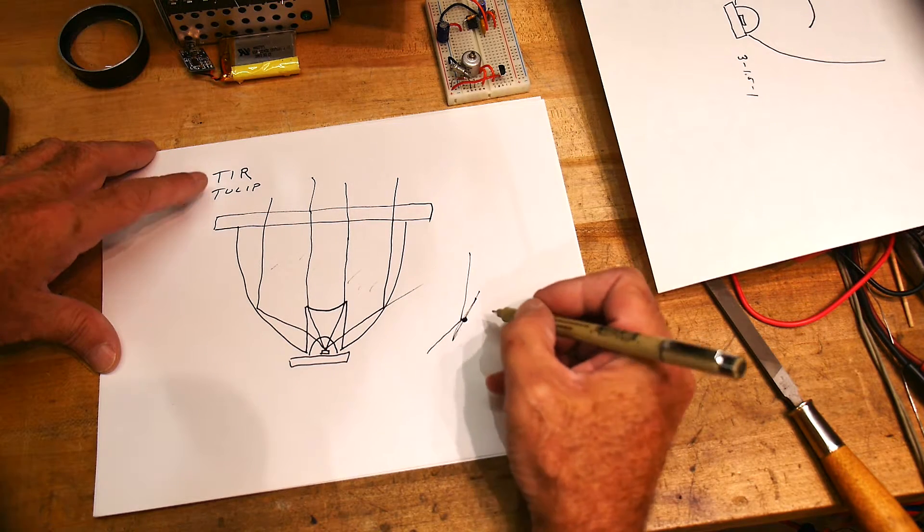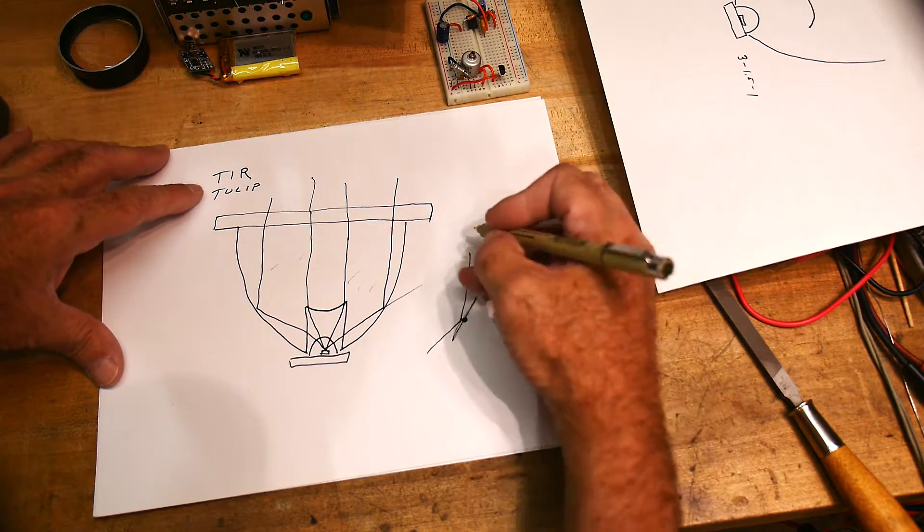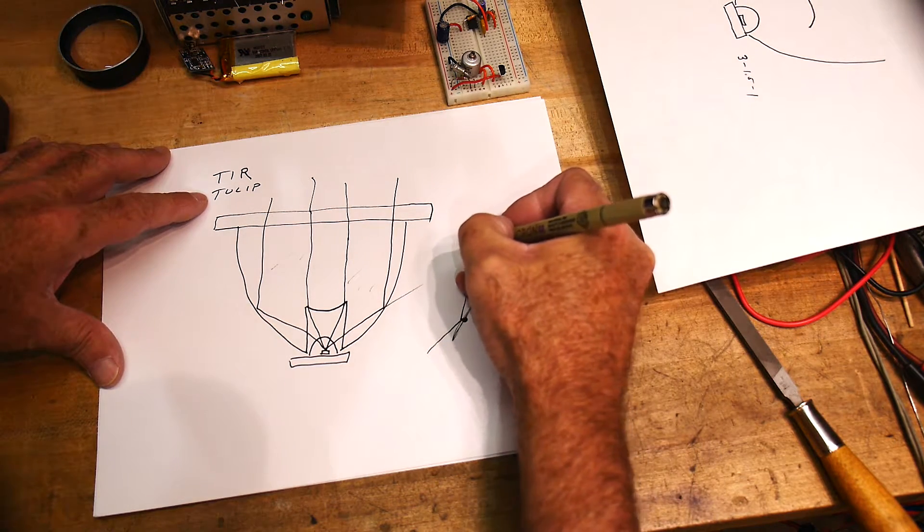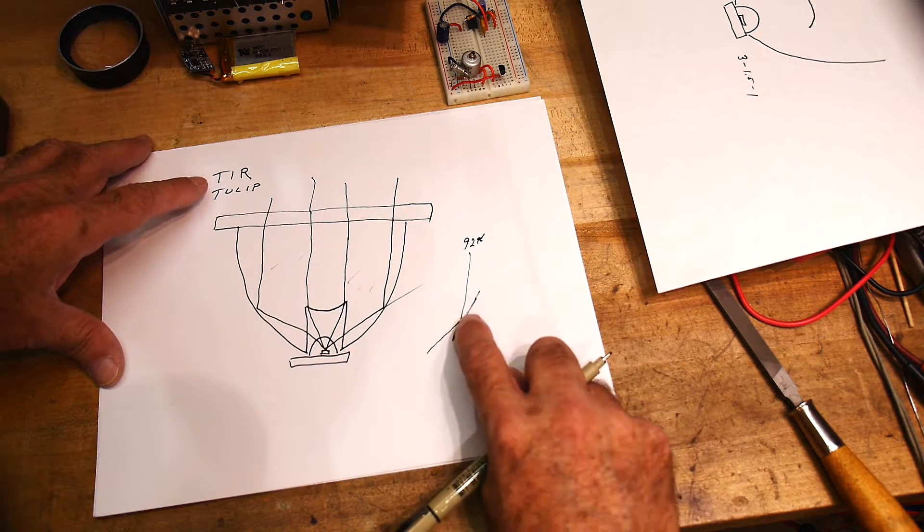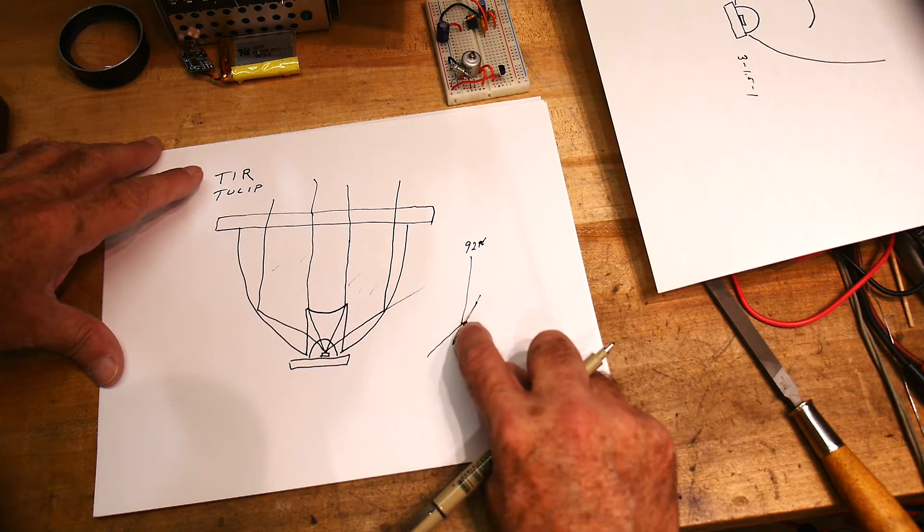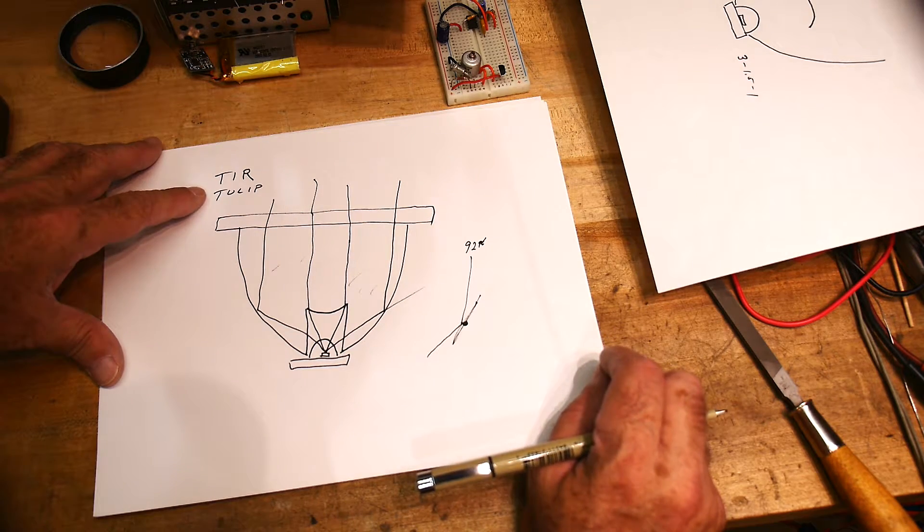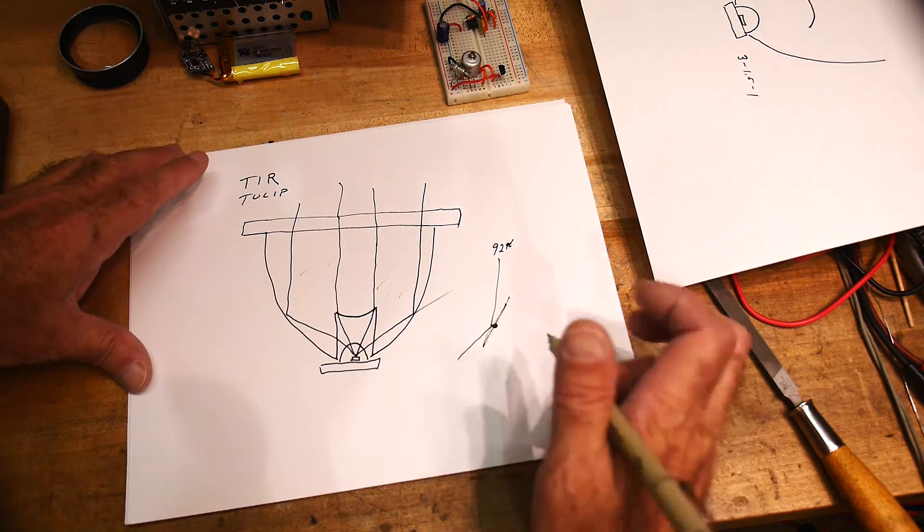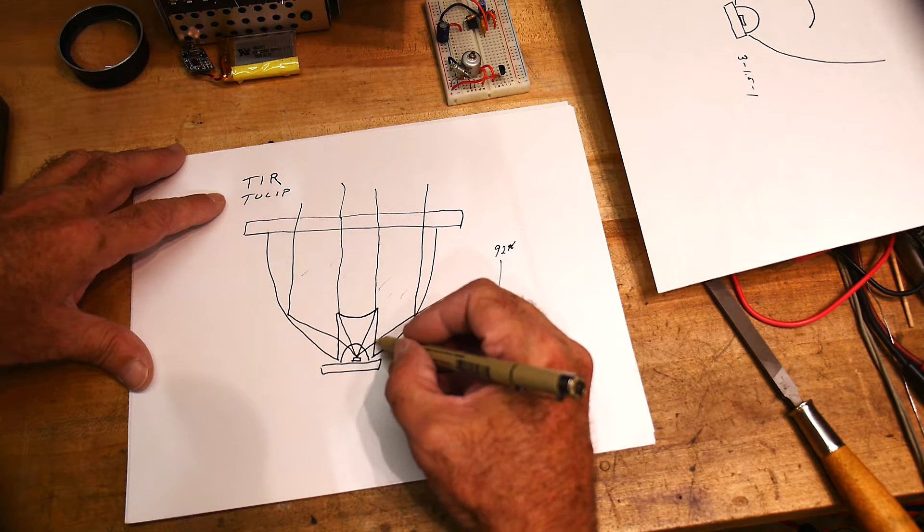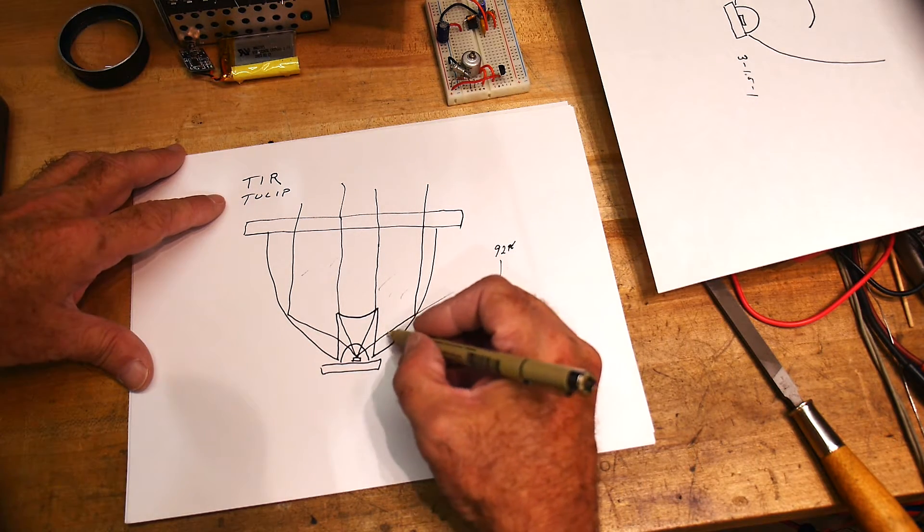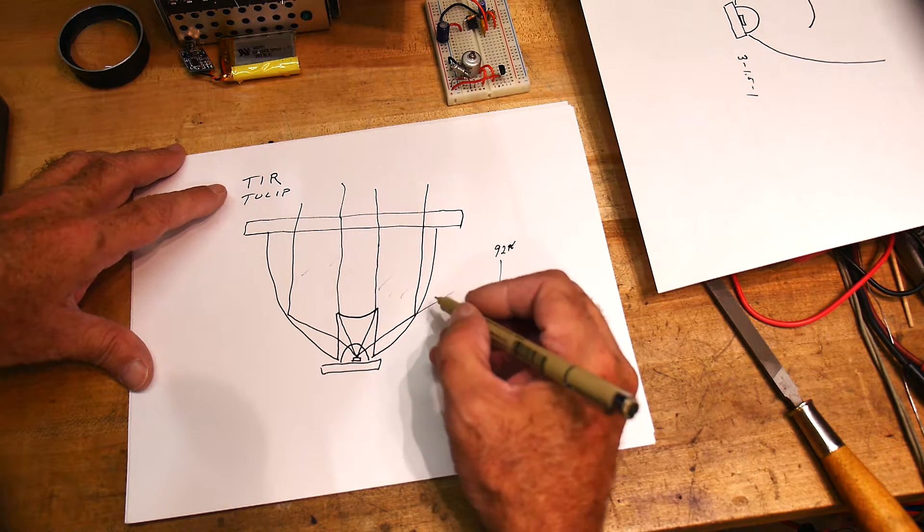Some of that light will actually get absorbed in the metal and die. So maybe 92% of the light will actually reflect, and you'll actually lose some percentage of the light here at this metal boundary.